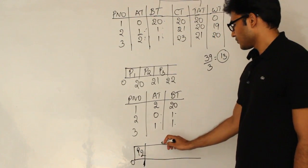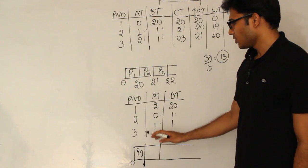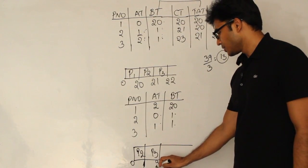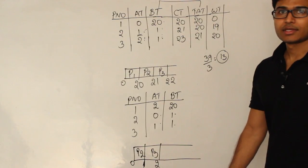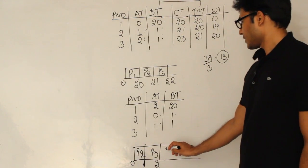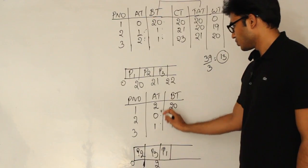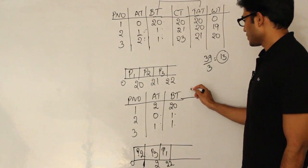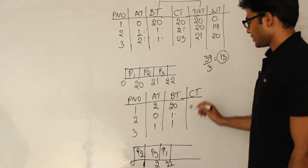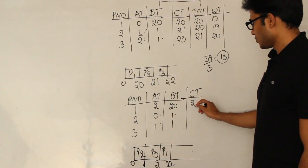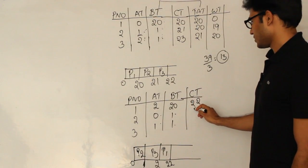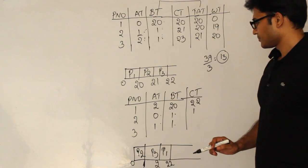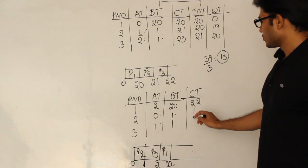At time 0 only P2 is available, so P2 is scheduled. At time 1, only P3 is available, so out of no choice I take P3. At time 2, P1 is finally taken and it runs till 22. Completion times: P1 = 22, P2 = 1, P3 = 2.